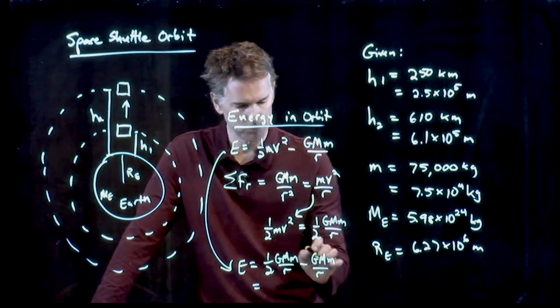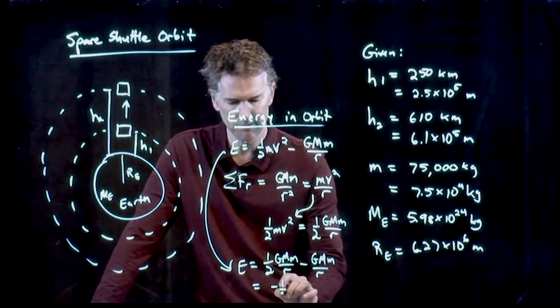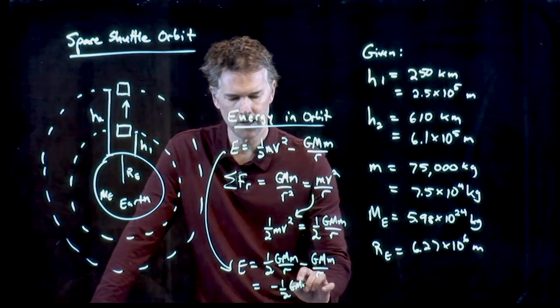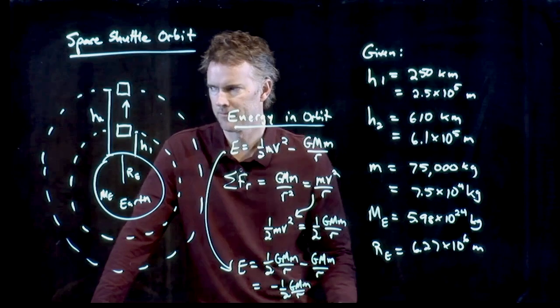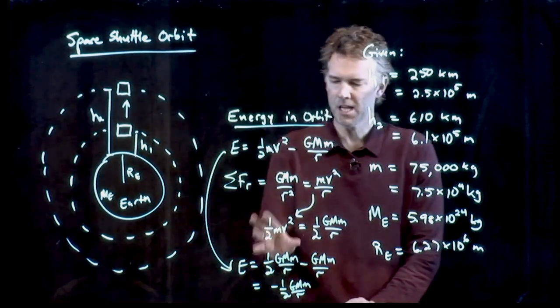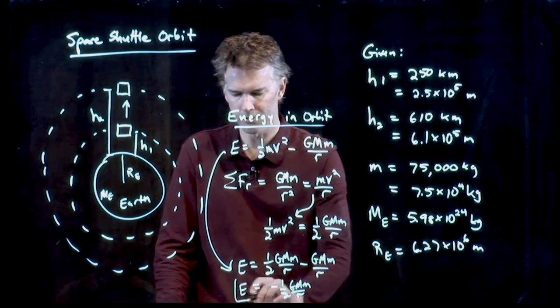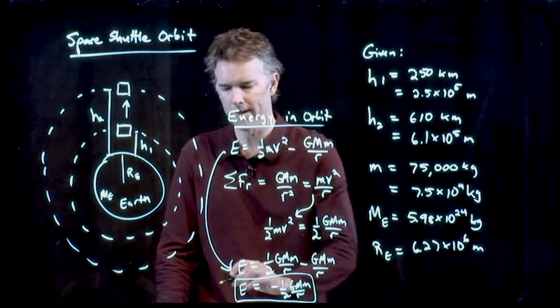And so we get a nice little final result here. It is a half minus one. And so we get negative a half GMm over r. This is the energy of a circular orbit, the total energy.